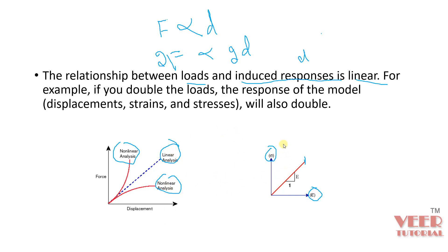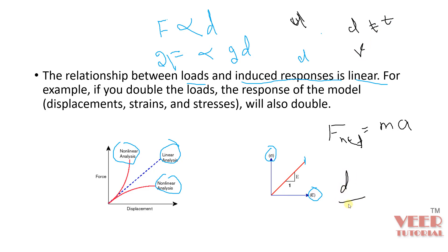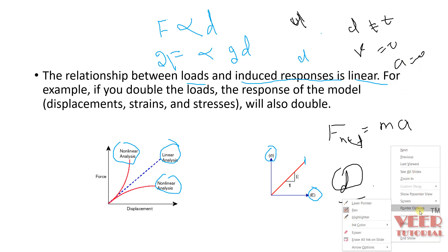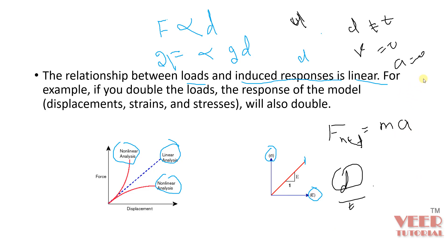When we write the governing equation for linear analysis, from Newton's equation we know that net force equals mass times acceleration (F = ma). In linear static analysis, displacement does not change with time, so velocity equals zero, and therefore acceleration equals zero. This means the term ma is cancelled. So the inertia force — mass — has no effect in linear static analysis.